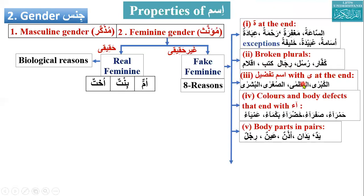Then there are three other conditions. We haven't studied ism tafdeel in detail, but like al-kubra, al-'uzma, al-sughra, al-bushra — if it has a ya at the end, ism tafdeel with a ya at the end is also considered feminine gender.